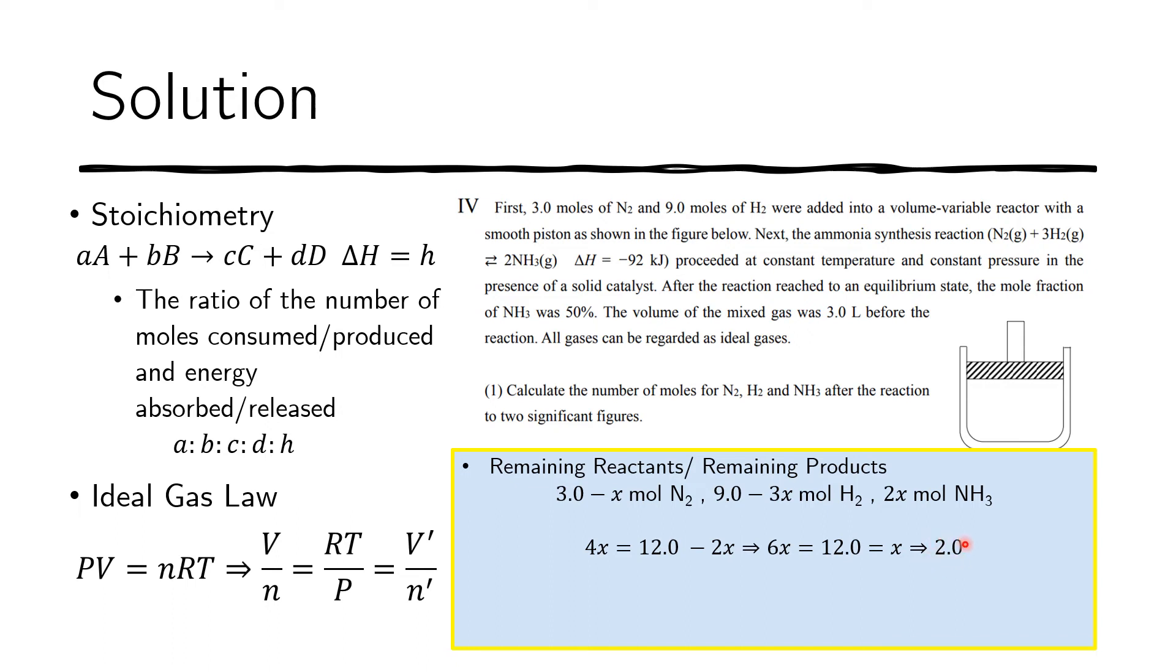That means 2.0 moles of nitrogen was consumed. How much remains? There is 3.0 at the beginning, and 2 was consumed, so the remaining nitrogen is 1 mole. We do the same for hydrogen. So x is 2, so 9 minus 3 times 2, 9 minus 6, 3 moles of hydrogen is left after the reaction. For the product, 2x, so 2 times 2.0 is 4 moles of ammonia was produced after the reaction.